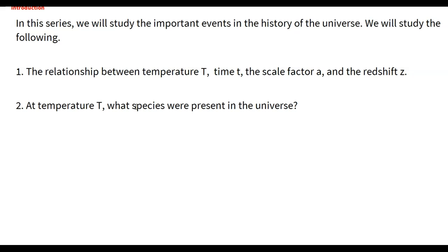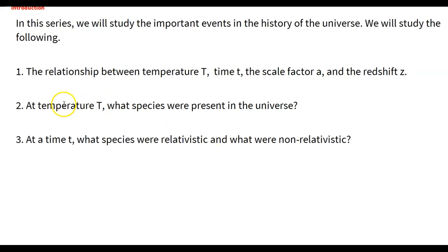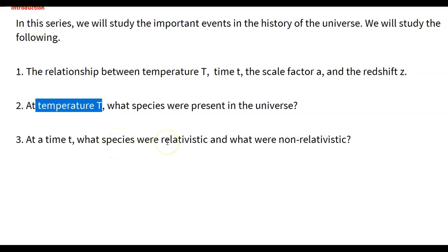We will explore in detail what species were present in the universe at a given temperature. Then we want to know, at a given temperature T, what species were relativistic and what were non-relativistic. It is very important to distinguish between the two — to know at a given temperature in the evolution of the universe what the relativistic species are, as relativistic species play an important role, and we will see what that role is.